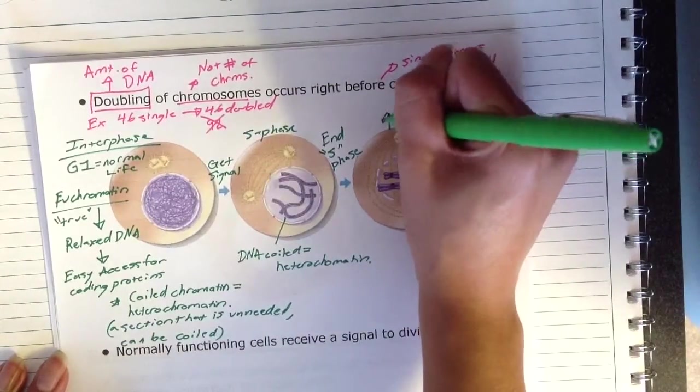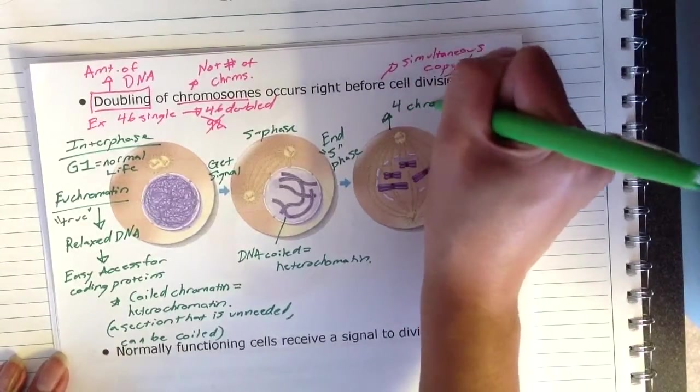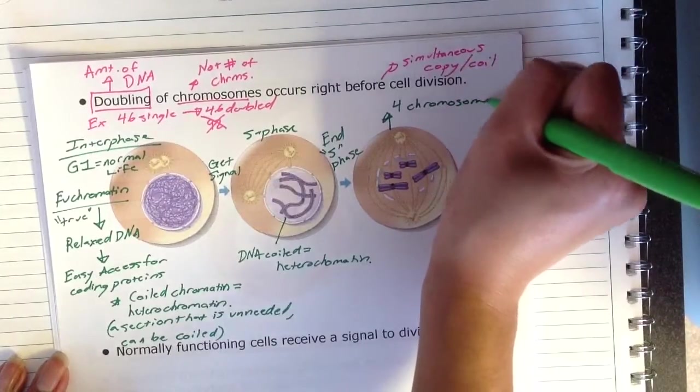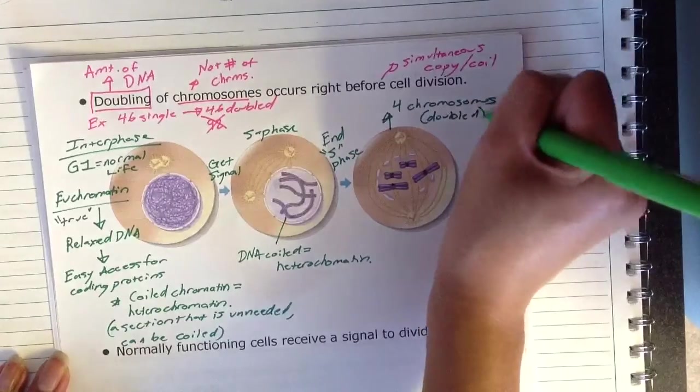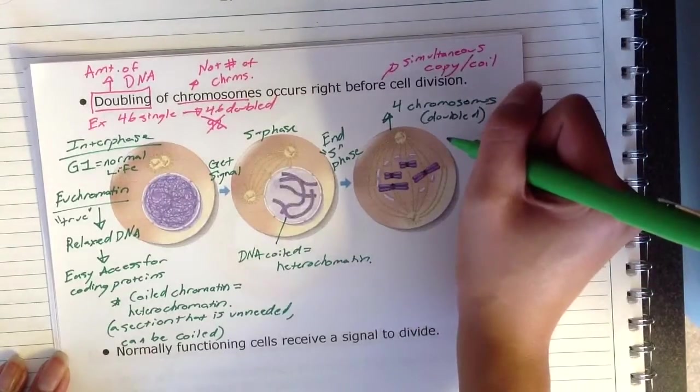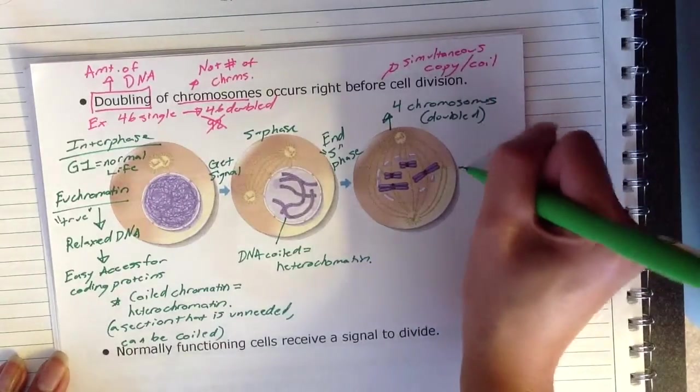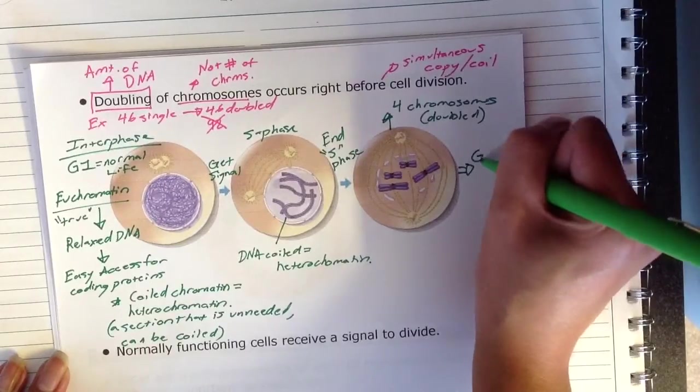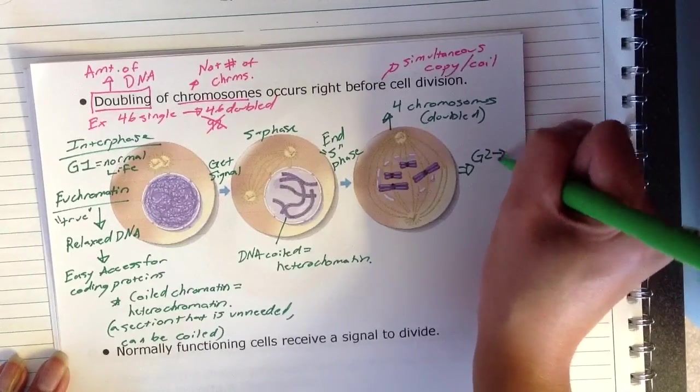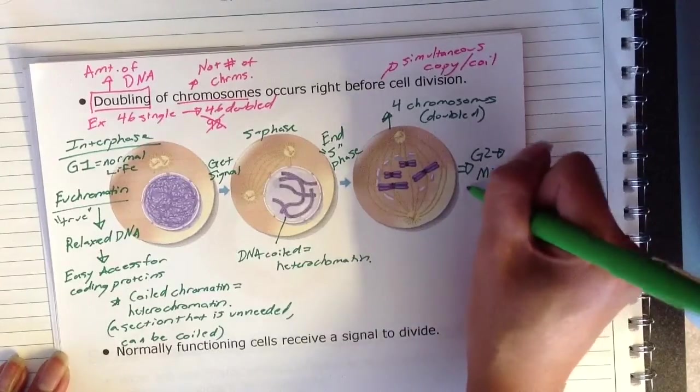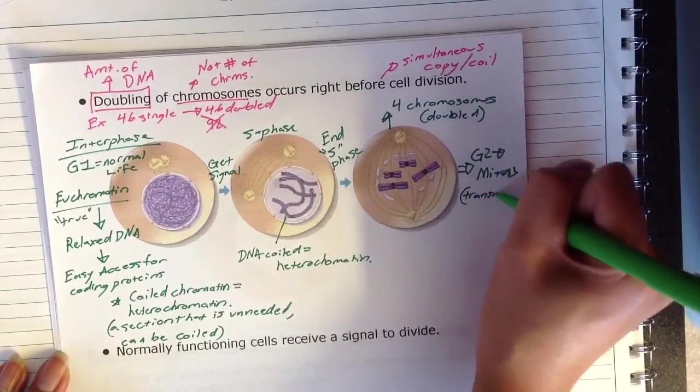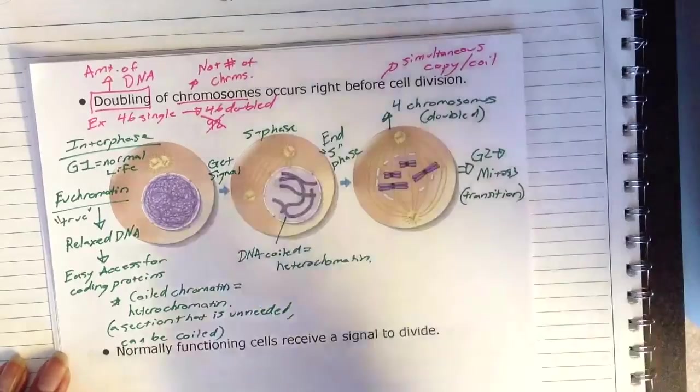You're going to end the S phase, and when you end the S phase, in this picture, you'll see that you have four chromosomes that are doubled. And these cells will go on to the G2 phase, which is going to get them to mitosis. And this is kind of that transitioning phase. G2 is a transition phase.